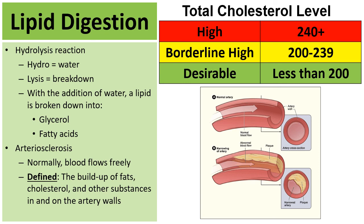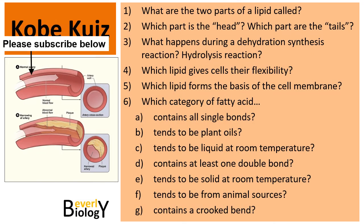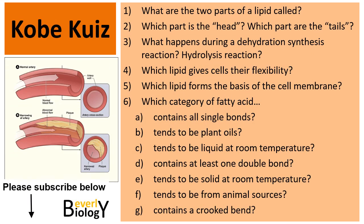The top picture shows a normal artery, wide open so blood can flow freely. The bottom picture shows the plaque and how the artery has partially closed. Those are some of the characteristics of lipids. Here's a little practice quiz — pause the video and try to answer these questions. Thanks for watching.